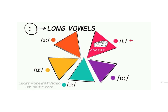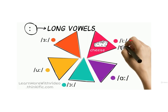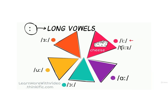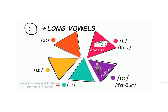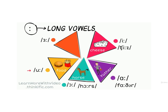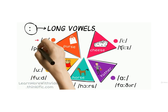E — Cheese. A — Father. O — Horse. O — Food. A — Purse.